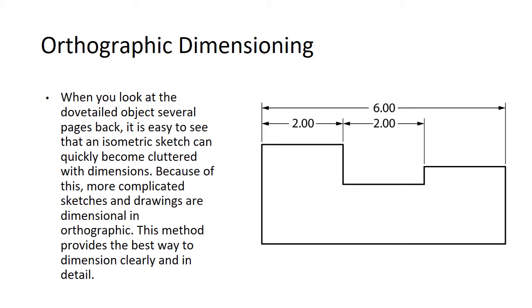Orthographic dimensioning. When you look at the dovetailed object several pages back, it is easy to see that an isometric sketch can quickly become cluttered with dimensions. Because of this, more complicated sketches and drawings are dimensioned in orthographic. This method provides the best way to dimension clearly and in detail. So instead of trying to dimension in three dimensions, we break it out.